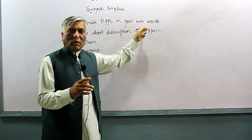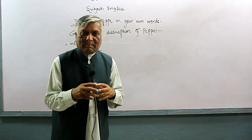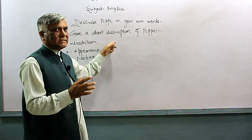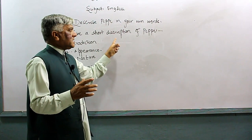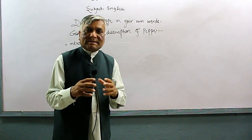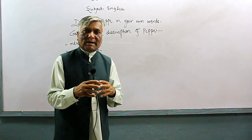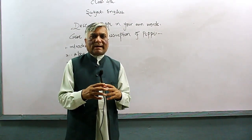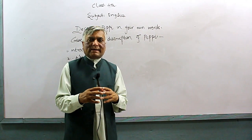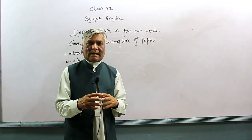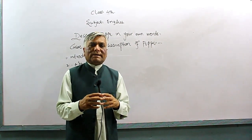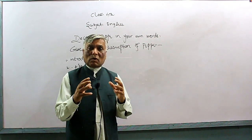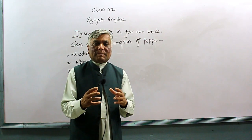The question is: describe Pippi in your own words. The second question, having the same meaning, is: give a short description of Pippi — Pippi ka description. In the description, show Pippi's appearance and her qualities. You have to write it in your own words — Pippi ka hulia aur uski kuch aadat apne alfaz mein bayan kijiye. Pippi ka outlook — how does Pippi look? You have to write it in your own words.